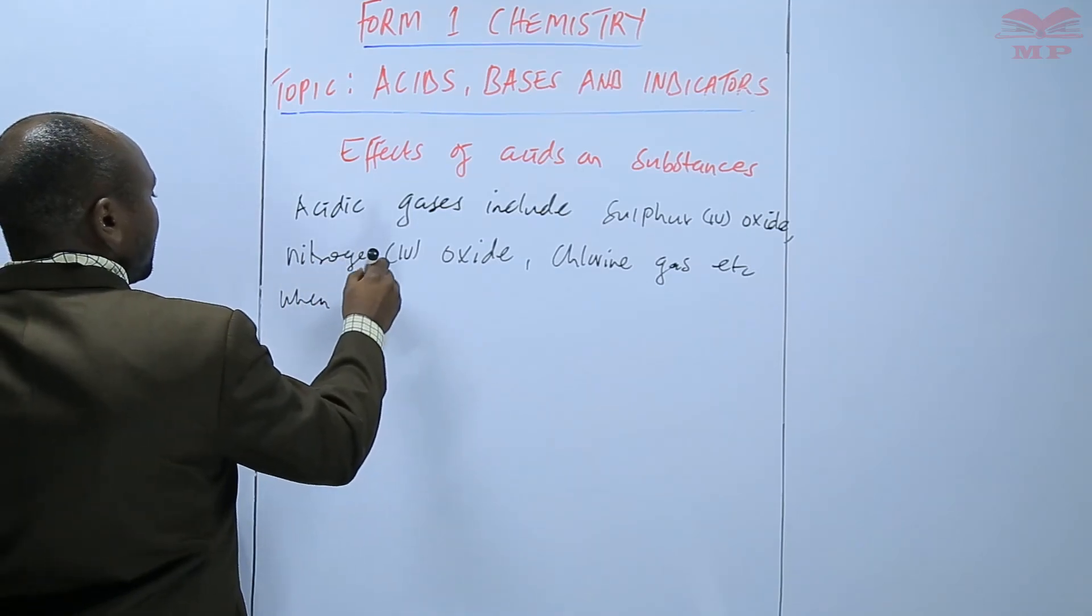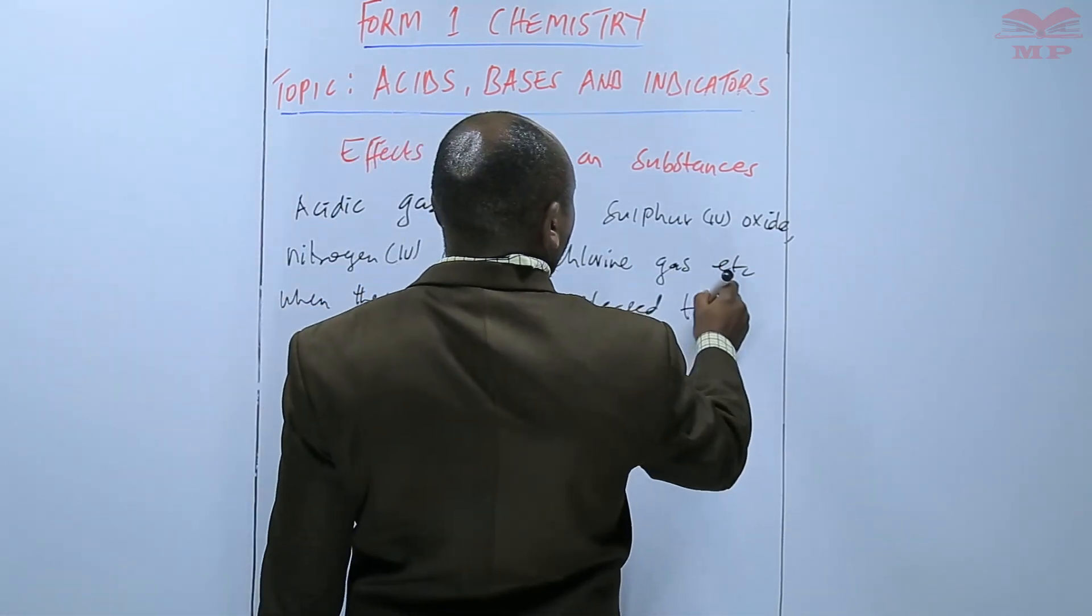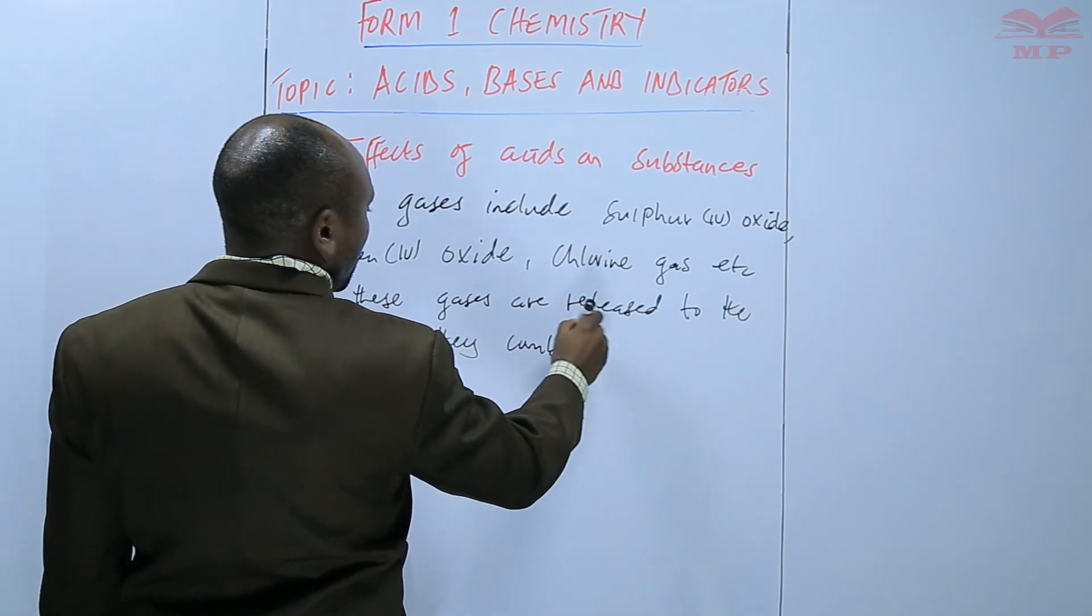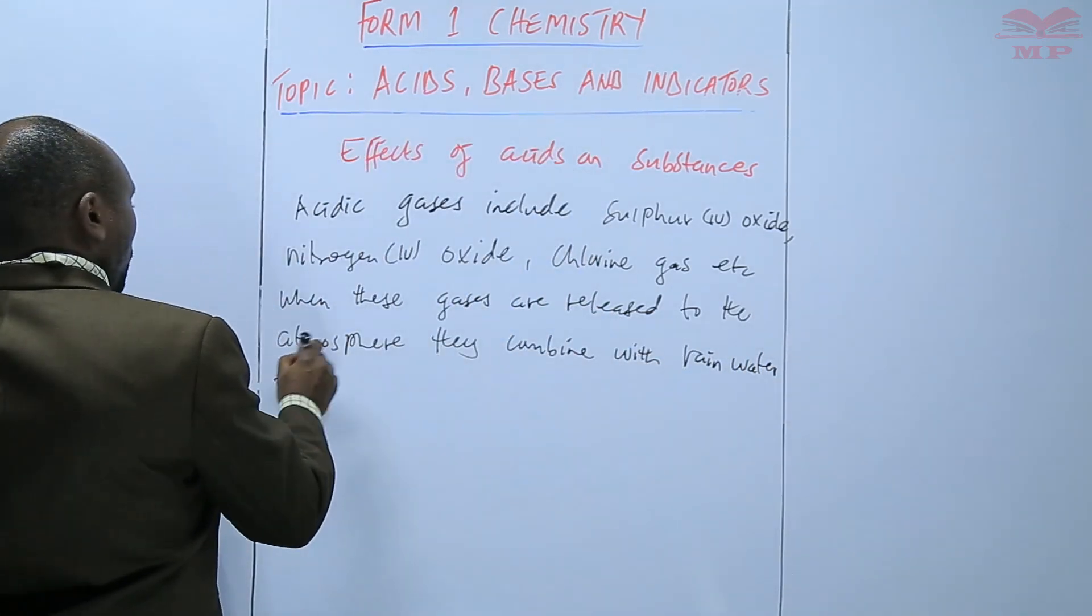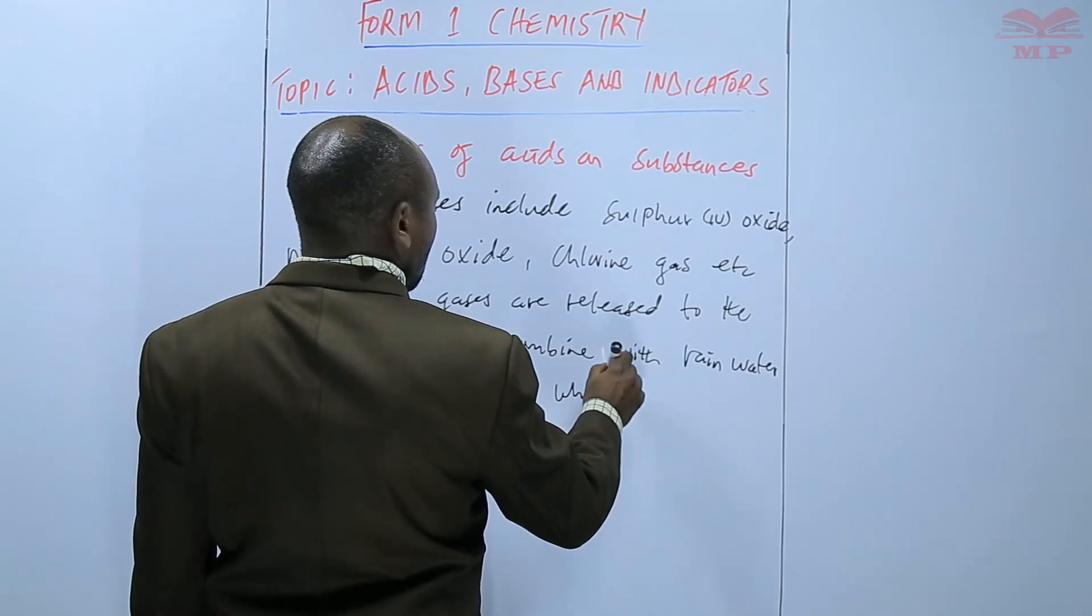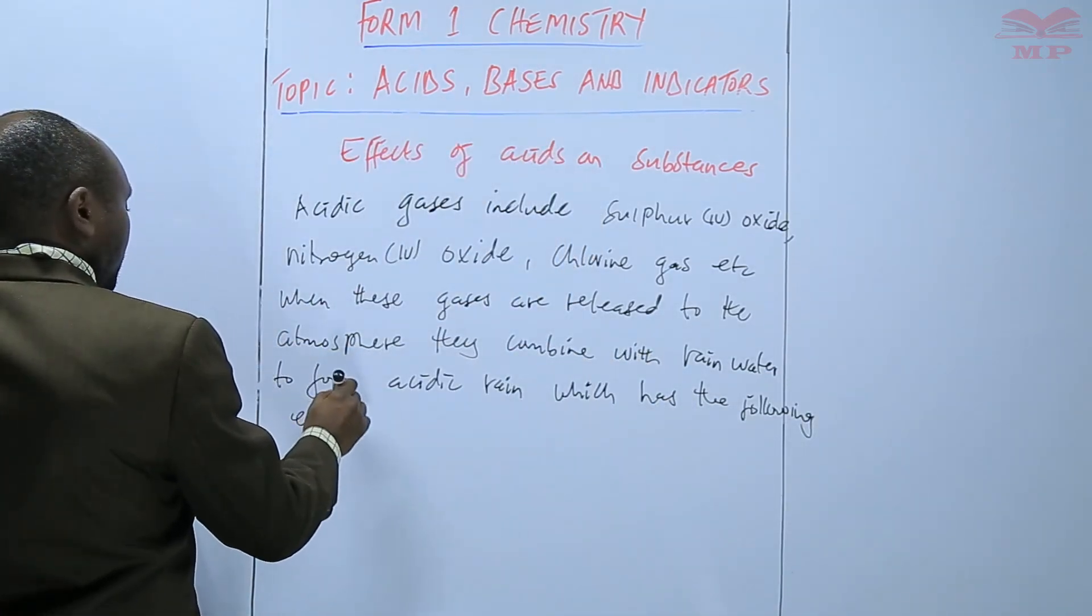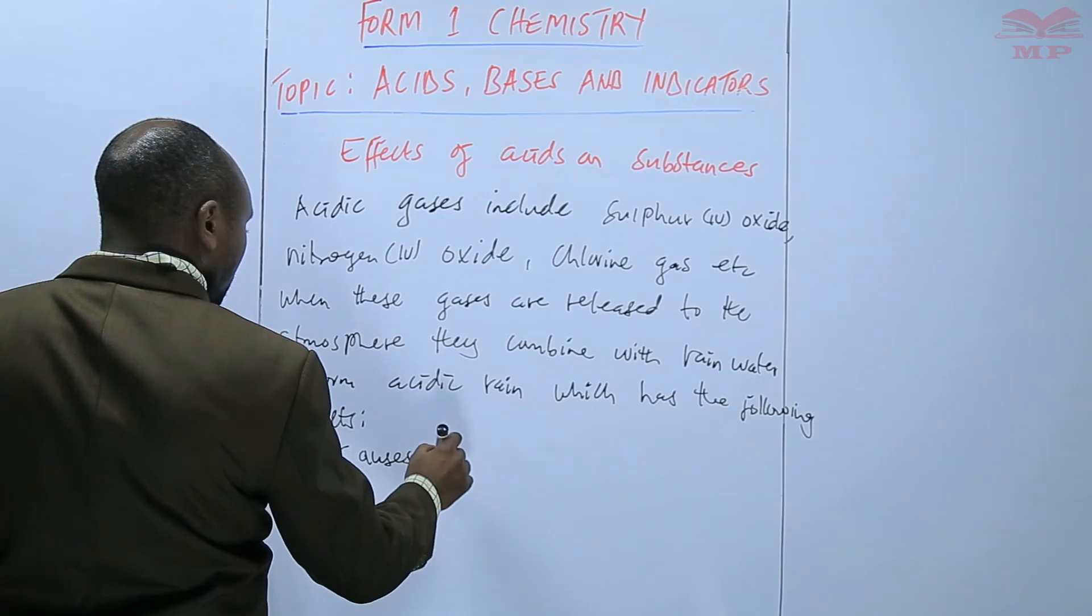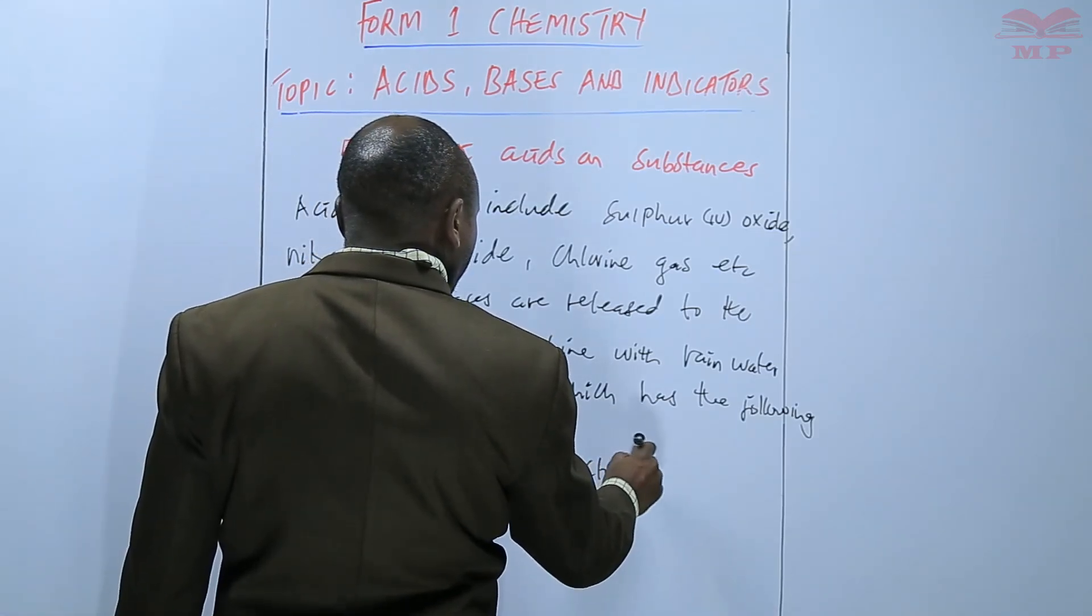When these gases are released to the atmosphere, they combine with rainwater to form acidic rain, which has the following effects. The acidic rain has the following effects: causes corrosion of rooftops or cause of buildings.